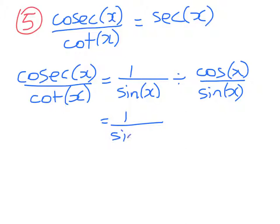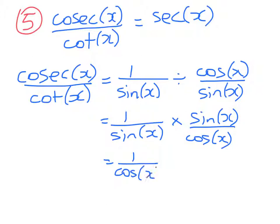Year nine fractions or probably year seven fractions. 1 over sin(x) times sin(x) over cos(x) which equals 1 over cos(x) which is sec(x) as required.